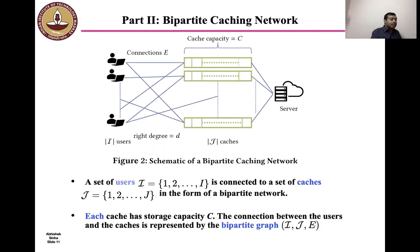Next, we come to the second part of our talk where we consider a bipartite caching network. In the bipartite caching problem, we have a set of users given by the set I and a set of caches each of capacity C given by the set J. The connection between the users and the caches are represented by the bipartite graph with the edge set E. We also assume for the sake of simplicity that the right degree of this bipartite network is given by d.